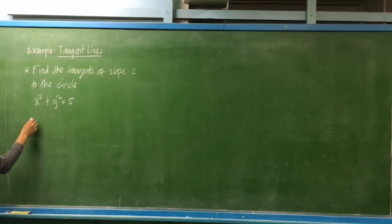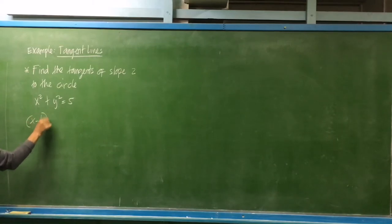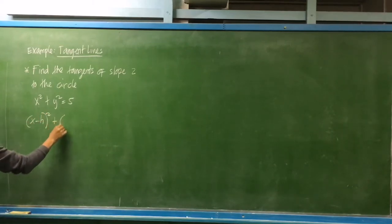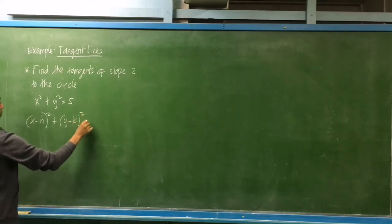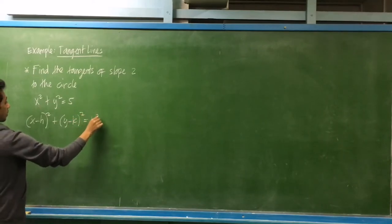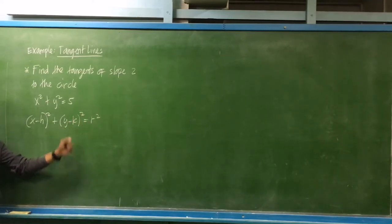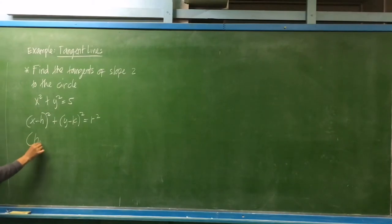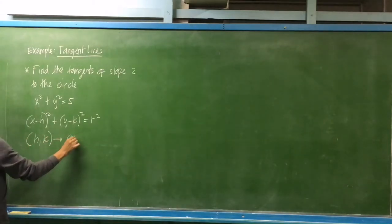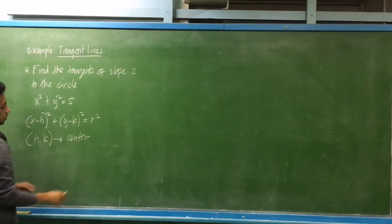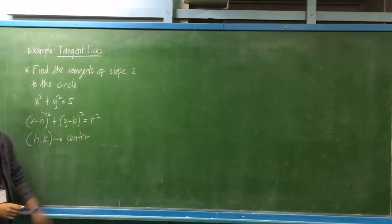If we have the standard equation for a circle, that is x minus h squared plus y minus k squared is equal to the radius squared. From analytic geometry, h and k are the coordinates of the center, and r is the radius of the circle.